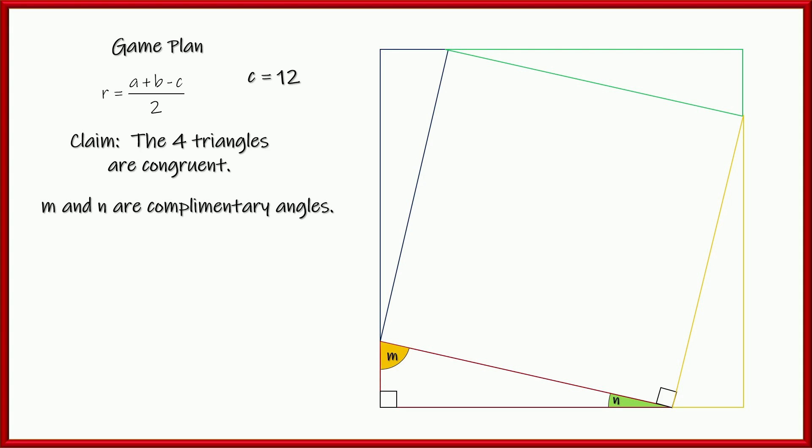Now, M and N are complementary. Well, this angle P over here and N are also complementary because N and P and this 90-degree angle make a straight line. So, they make 180 degrees. This one's 90. So, that means that N and P also must make 90.